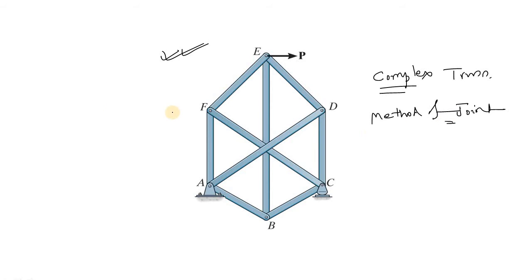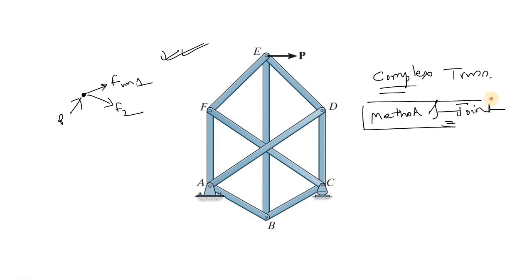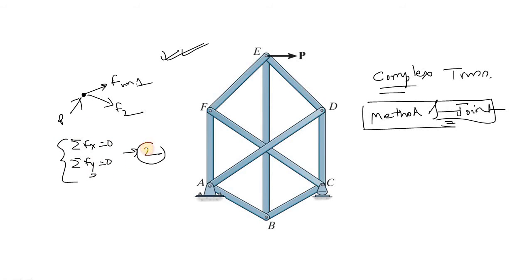What is the method of joint? Simply, we assume that at any joint there may be some unknown forces. Maybe there are some externally applied loads. The main basis of the method of joint is that at any joint, the summation of Fx is equal to zero and the summation of Fy is equal to zero. So, the summation of horizontal axial forces is equal to zero and the summation of vertical axial forces is also zero. As the number of equations is two, the condition for applying the method of joint is that the number of unknowns must be less than or equal to two.